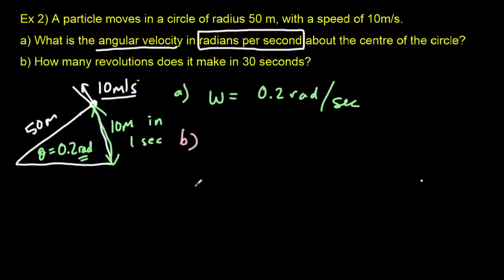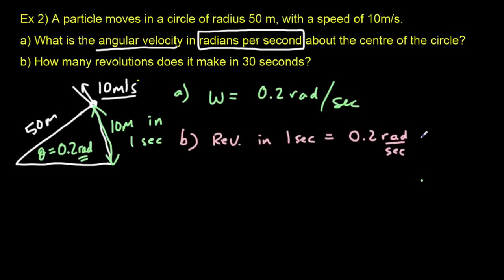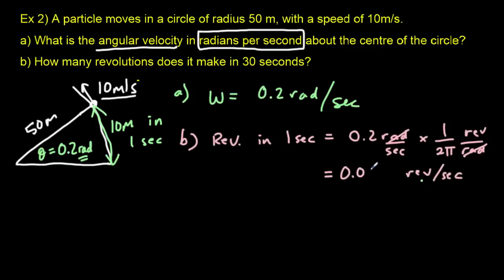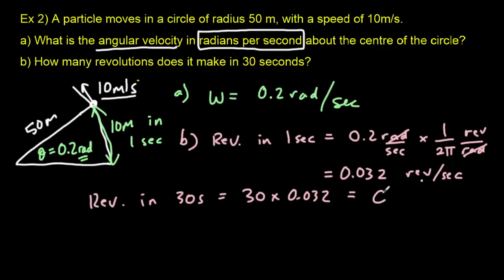For part B, let's find how many revolutions are done in 30 seconds. In one second there are 0.2 radians, and multiplying by the conversion (one revolution equals 2π radians), the radians cancel out giving 0.032 revolutions per second. So the revolutions in 30 seconds is 30 times that — 0.96 revolutions, almost a full revolution.